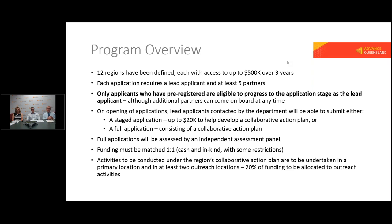Where proponents are still undecided or are not advanced around what would be the composition of their collaborative action plan, they require a staged application, which will be open until the 28th of February next year. We are setting aside $20,000 out of the $500,000 per region as a funding contribution towards getting the parties together to work on a unified approach and build the collaborative action plan. You are free to select an agent, consultant, or advisor to work with, but it is limited to $20,000. If that funding is called upon, it will diminish the overall $500,000 budget for the three-year program to the extent that it's required.